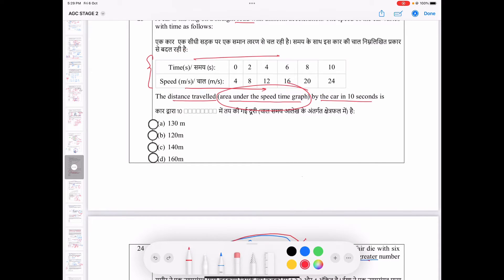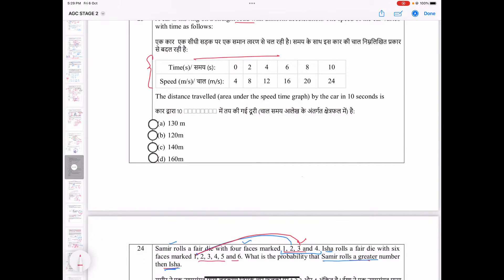This is the table given here, speed of time. You have to make a graph here. And in that graph, the area is enclosed. That area will give our distance traveled. So, first of all, we will see how much distance that car will cover in 10 seconds.